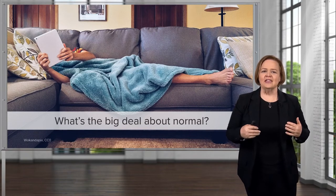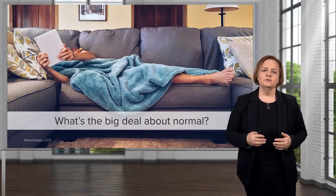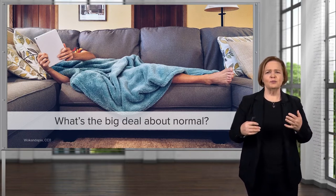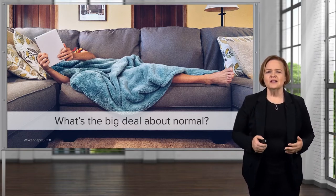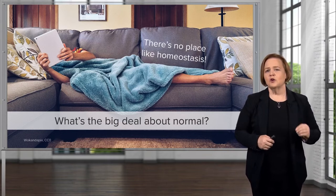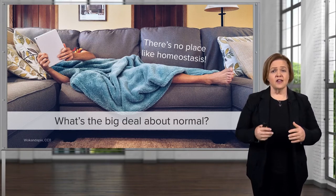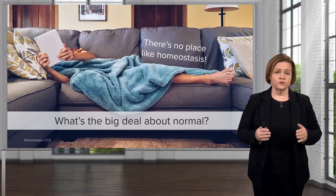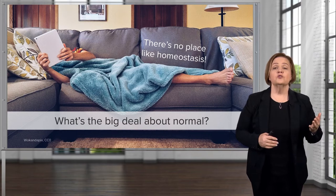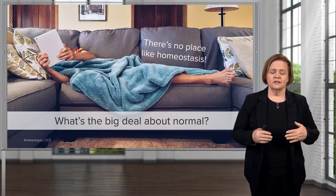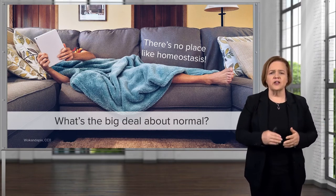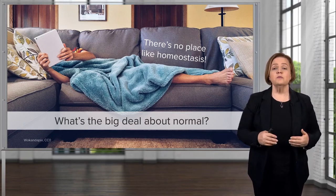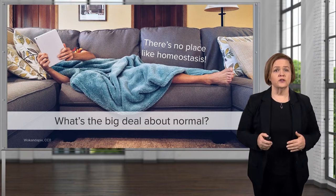We're talking about what's the big deal about normal. Look how comfortable this person looks — they're on their couch, they're at home, they've got their favorite blanket. The big deal about normal is it's just like homeostasis in your body, which means a state of balance. Your body is most comfortable there. That's why I always say there's no place like homeostasis. Your enzymes work better, your cells work better — everything functions the way it's supposed to when your body is in a state of homeostasis.